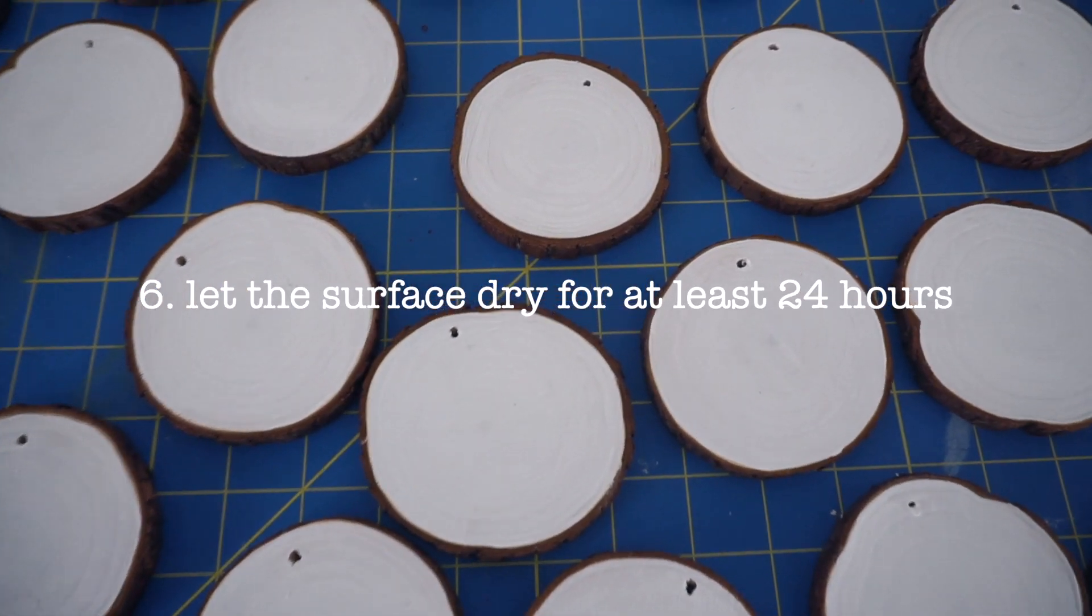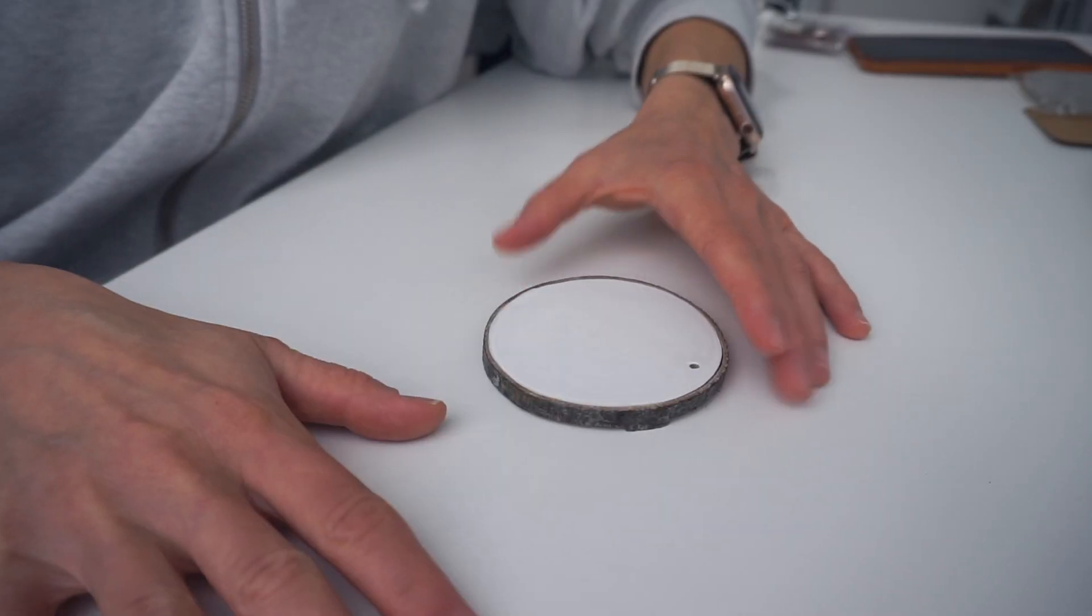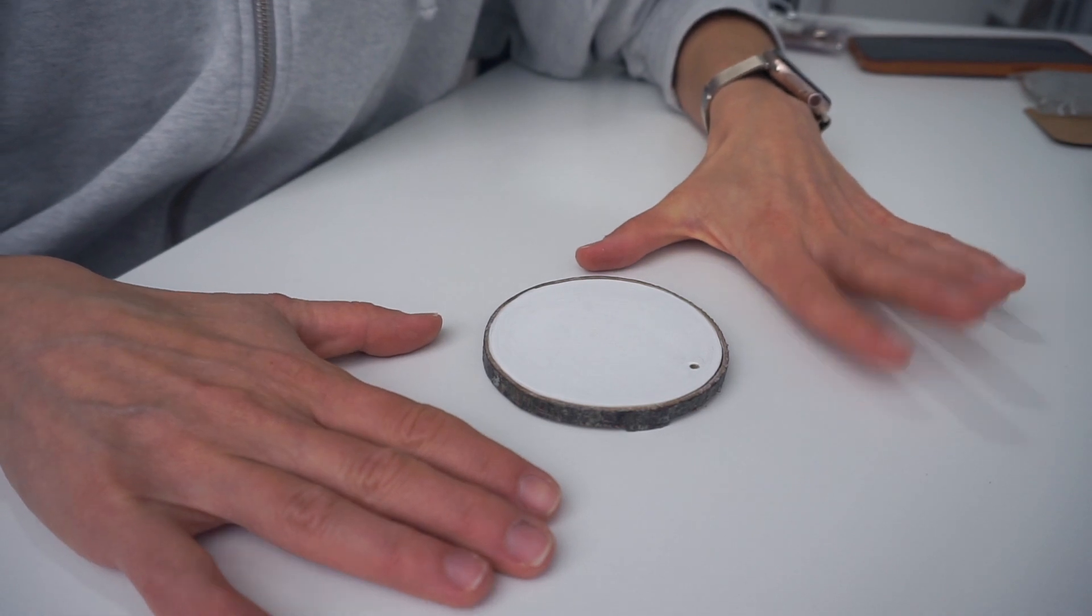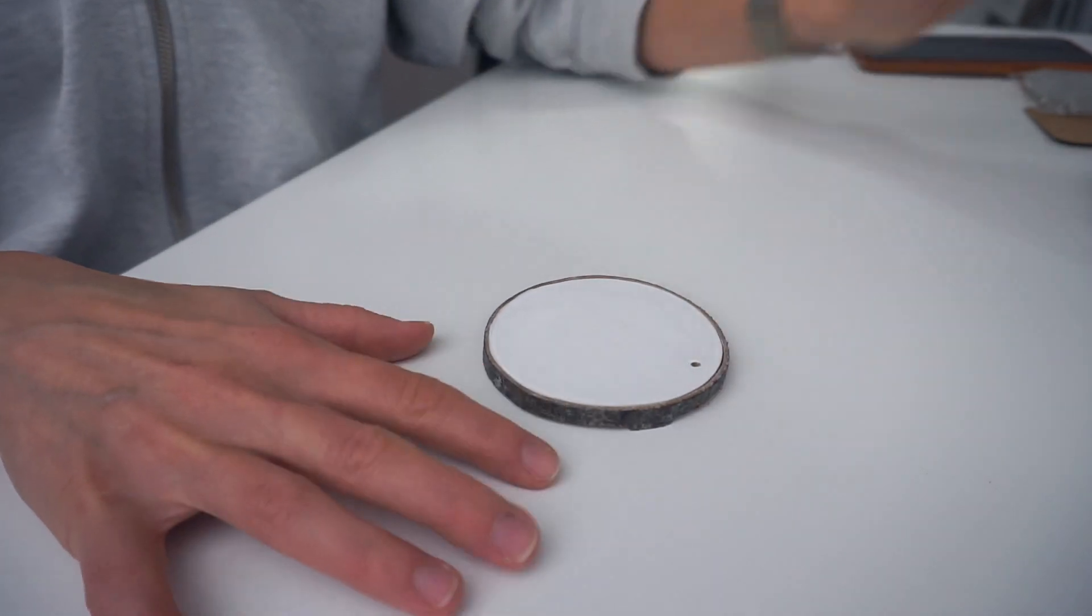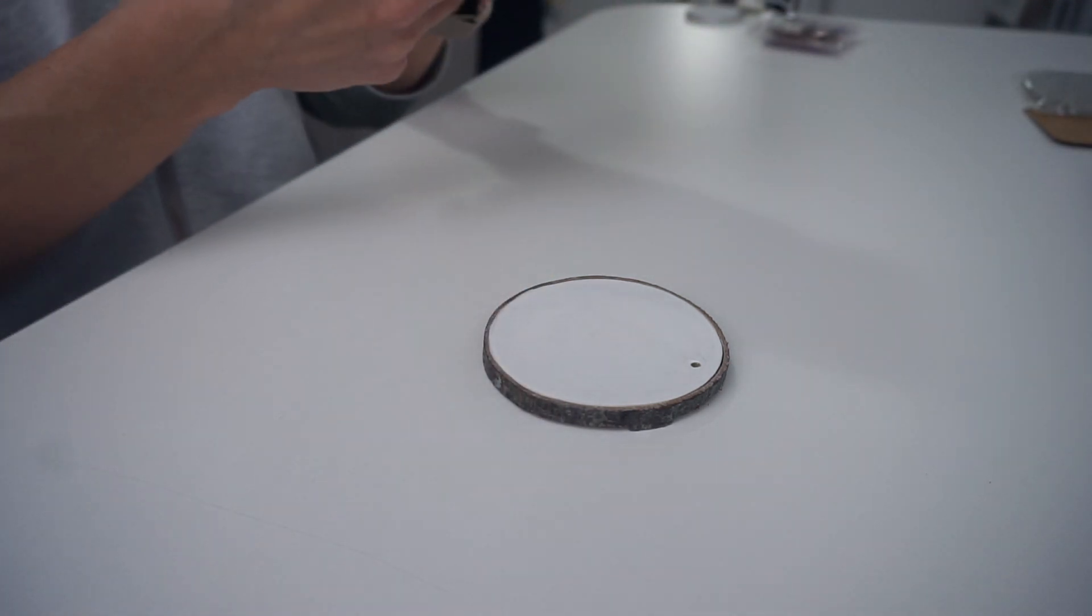After gesso is applied, I let it fully dry and then I apply two coats of watercolor ground. Let your watercolor ground dry for at least 24 hours and you're ready to start painting. My circle is fully dry and I just use sandpaper to make the surface really smooth. You don't have to do it, but my surface was a little bit too rough for me.